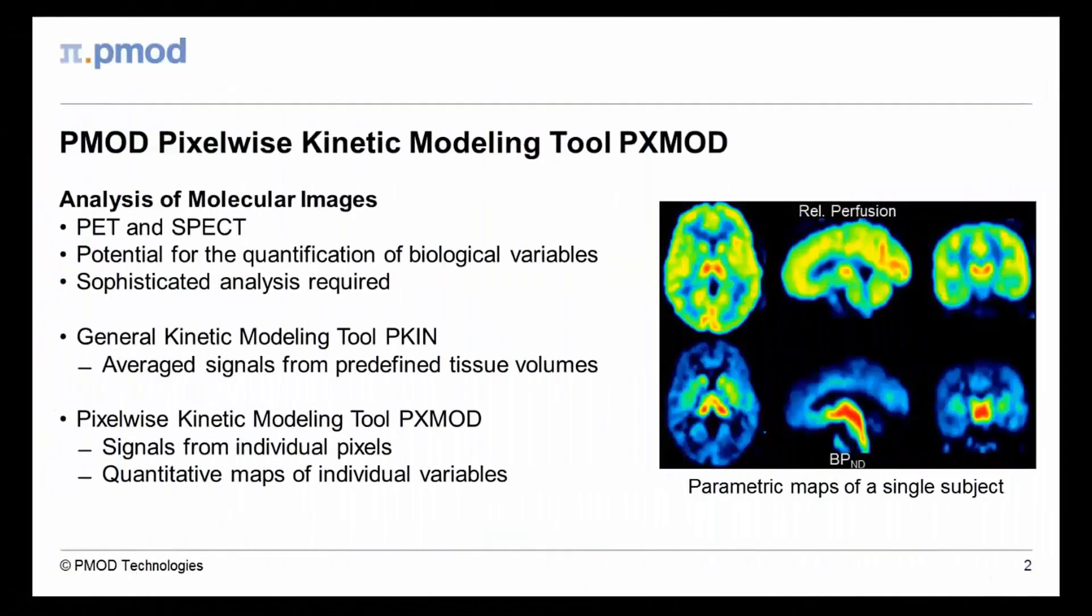The quantitative potential of functional images from PET or SPECT can only be exploited with sophisticated data analysis approaches. PMOD's General Kinetic Modeling Tool analyses averaged signals from predefined tissue volumes, resulting in tabulated data ready for statistical analysis.